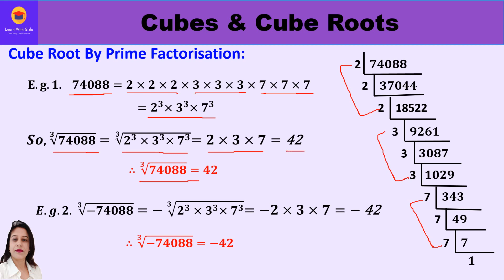Taking one factor from each triplet, we get 2 × 3 × 7, which equals 42. So the cube root of 74088 is 42. Now if we make it a negative integer, the cube root of minus 74088 — we just keep the minus sign outside, because the cube root of a negative number is also negative. So cube root of minus 74088 equals minus 2 × 3 × 7, which equals minus 42.